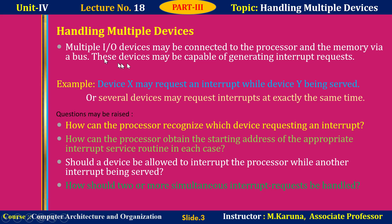Multiple IO devices may be connected to the processor and the memory through a bus. These devices may be capable of generating interrupt requests. Suppose device X may request an interrupt while device Y is being served, or several devices may request interrupts at the same time. This gives rise to a number of questions. How can the processor recognize which device is requesting an interrupt?